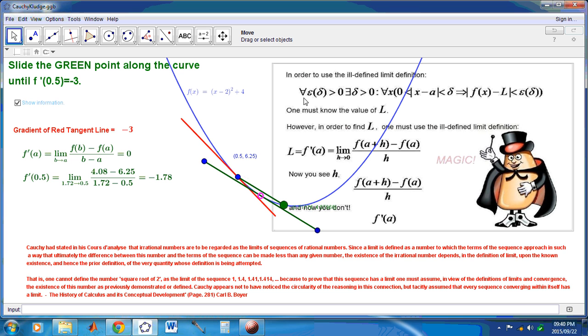In order to use the ill-defined limit definition, now you'll see that I have here, epsilon is a function of delta. It really is a function of delta, even though mathematicians don't like to think so. You could actually just say, for all epsilon greater than 0, but really it's for all epsilon function of delta greater than 0.